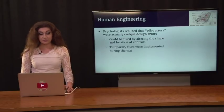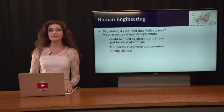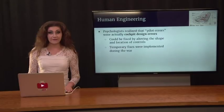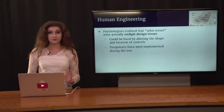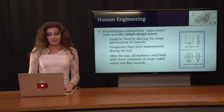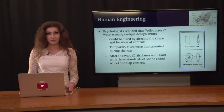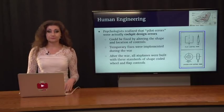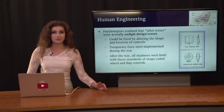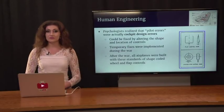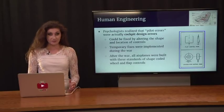Psychologists realized that these pilot errors were actually cockpit design errors that could be fixed by altering the shape and location of the controls. This was 1943 — the war was still going. Once the root cause was identified, temporary fixes were implemented, including a labeling system with rubber bands to disambiguate the similar controls. After the war, all airplanes were built with shape-coded wheel and flap controls: the flap control now has a square shape and the landing gear has a round knob, with labels, differentiated shapes, and separated locations. Something as simple as that was causing deadly damage — but it was not the pilot's fault; it was poor design.